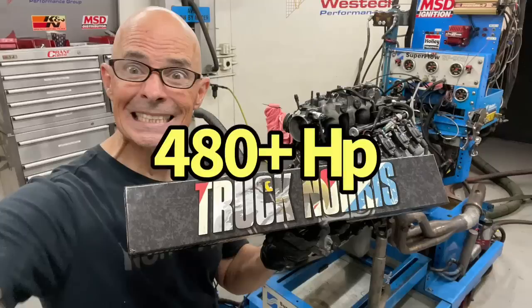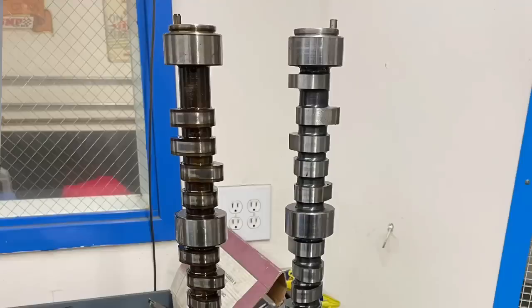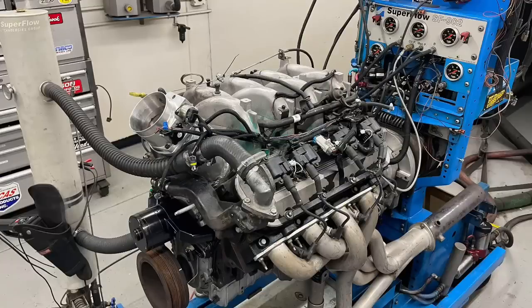And for today, here's the question. Which one would you rather have? A lightweight, all-aluminum, 5.3 liter suitably modified to make over 480 horsepower and somewhere near 400 foot-pounds of torque. Or a much larger 8.1 liter, also suitably modified to make over 480 horsepower, but nearly 600 foot-pounds of torque. Which one of those would you rather have? Let's check it out.